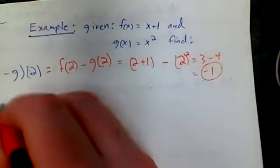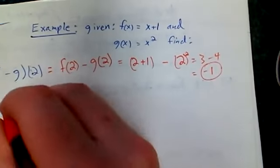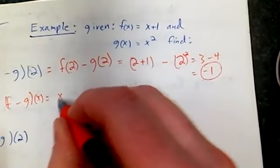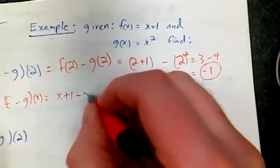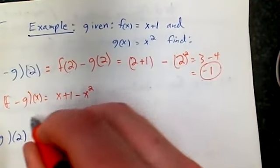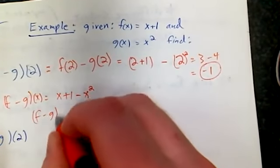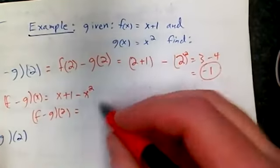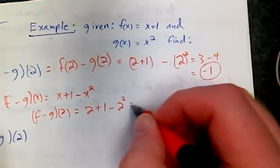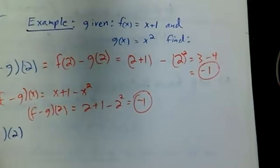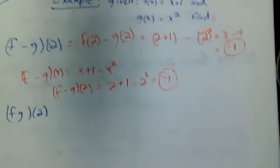Alternatively, I could have said, well, I know f minus g of x is x plus 1 minus x squared. Then I could do f minus g of 2 and say, oh yeah, that's 2 plus 1 minus 2 squared, and we can still get negative 1. So either way is fine.